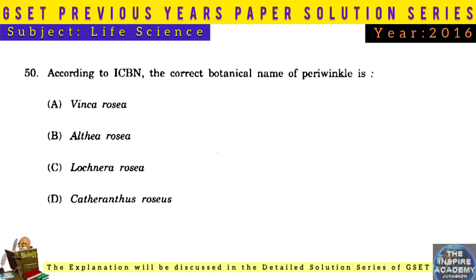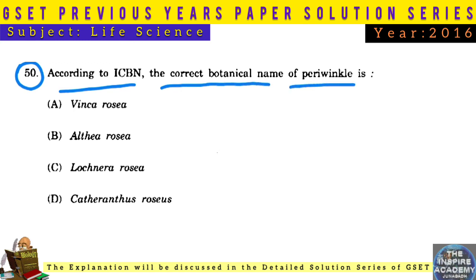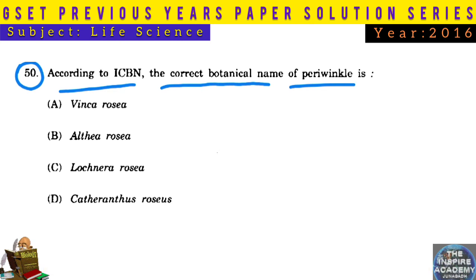Last question of Paper 2. Question No. 50: According to ICBN, the correct botanical name of periwinkle is Catharanthus roseus.